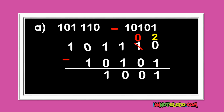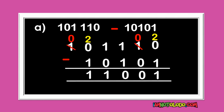1 minus 0 is 1. This cannot minus this, so what do we do? We borrow. This becomes 0. What are we borrowing? 2. 2 minus 1 is 1. So this is your final answer. Did you get it right? Good.